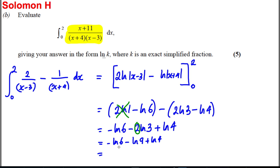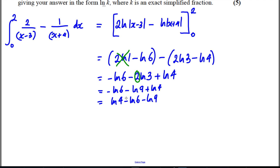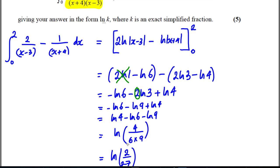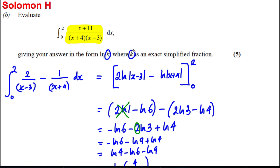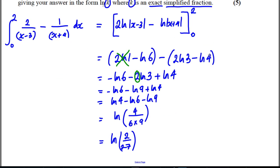And now we can write that as ln(4) - ln(6) - ln(9). Obviously I can combine the logs, they're being subtracted as ln[4/(6×9)], which simplifies, 6 times 9 is 54, and so I could simplify that as ln(2/27). The reason I wrote it like this, make sure you look up here, you want it in the form ln K where K is an exact simplified fraction, and we're done for that question.